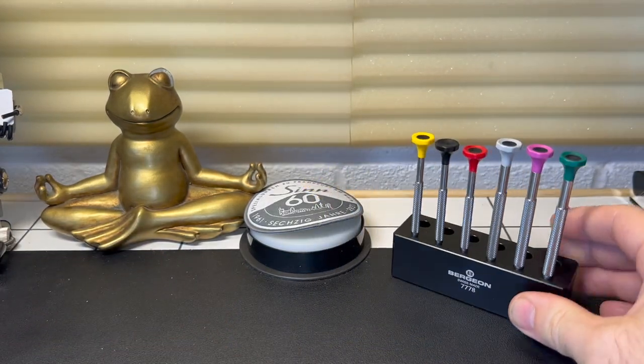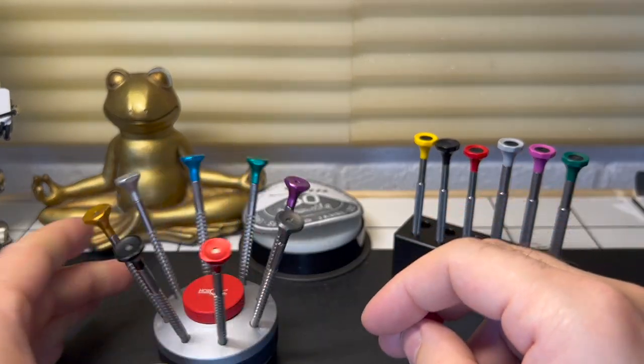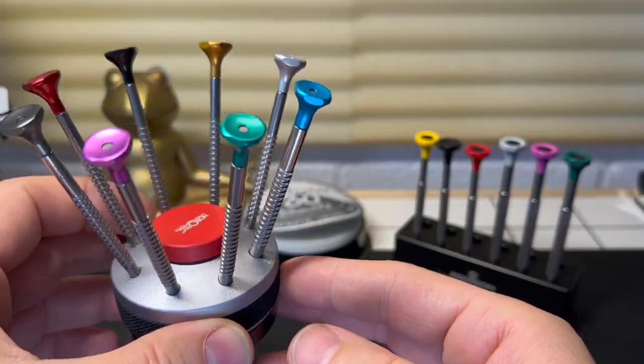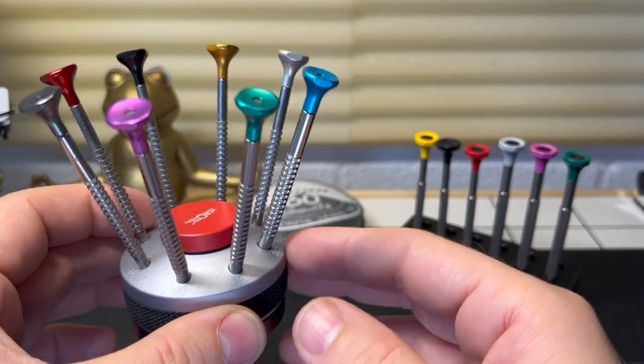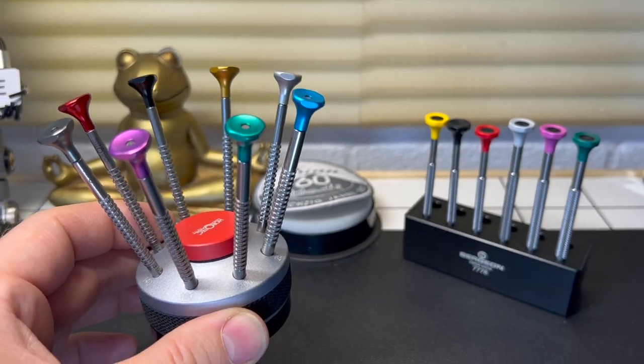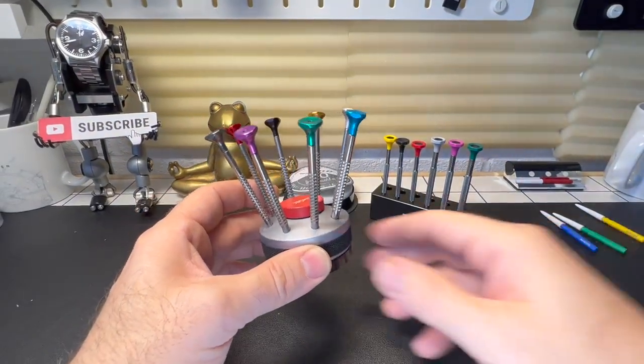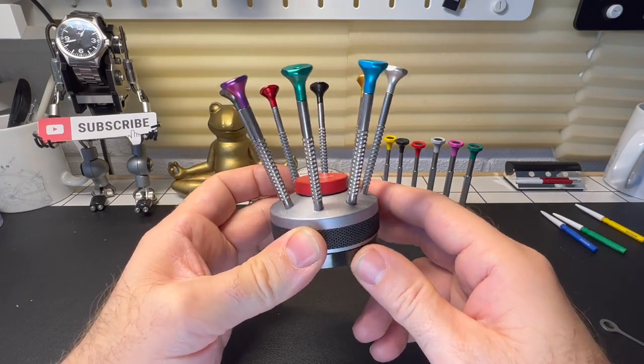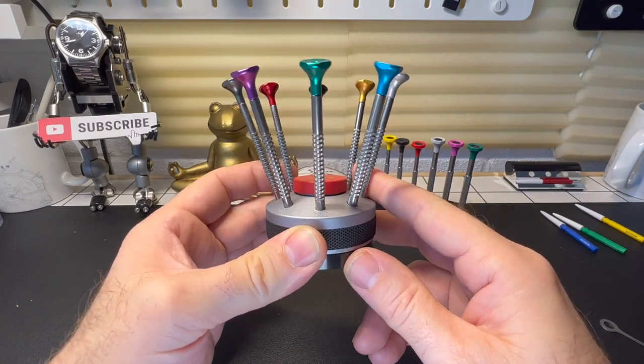But what I actually use at university is the Horotech ones here. Now these are more expensive. Let me zoom out a little bit there so you've got better perspective. These come in, I think around 160 pounds roughly.